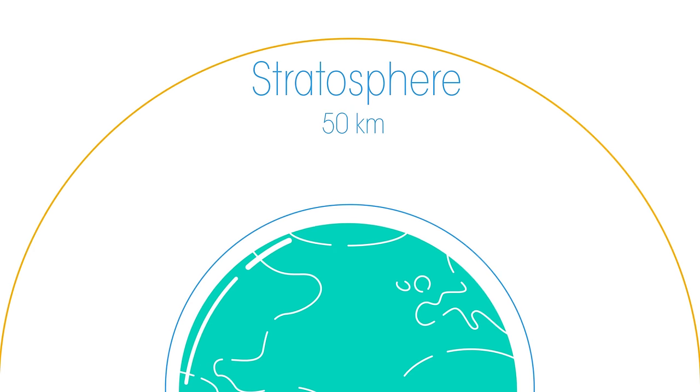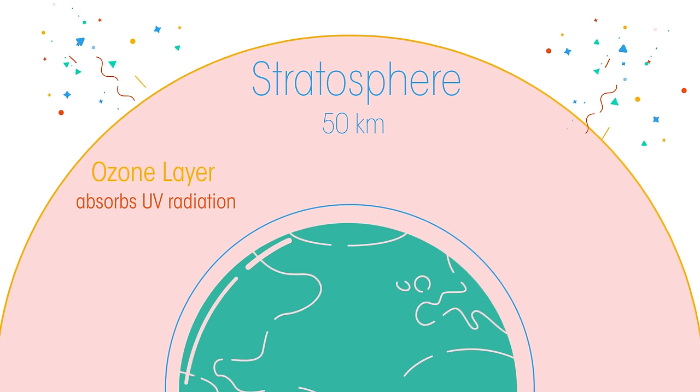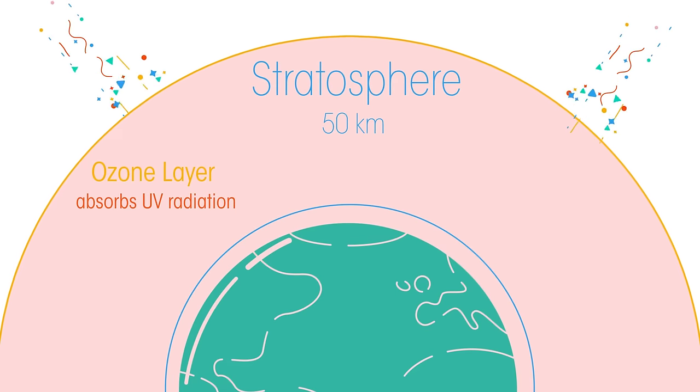Then, the stratosphere, up to 50 kilometres, which contains the very important ozone layer. The ozone layer both heats the stratosphere and also absorbs and scatters harmful ultraviolet radiation from the sun, protecting all life on Earth.